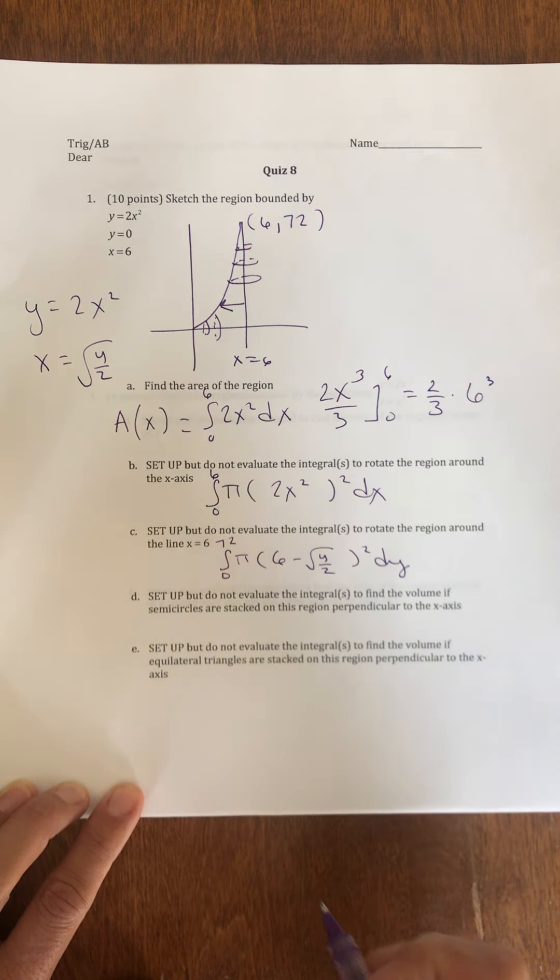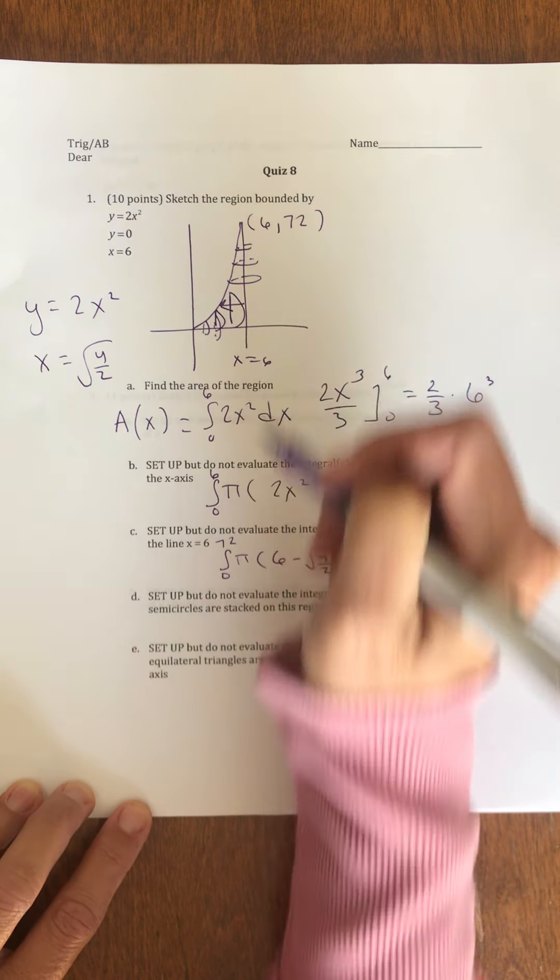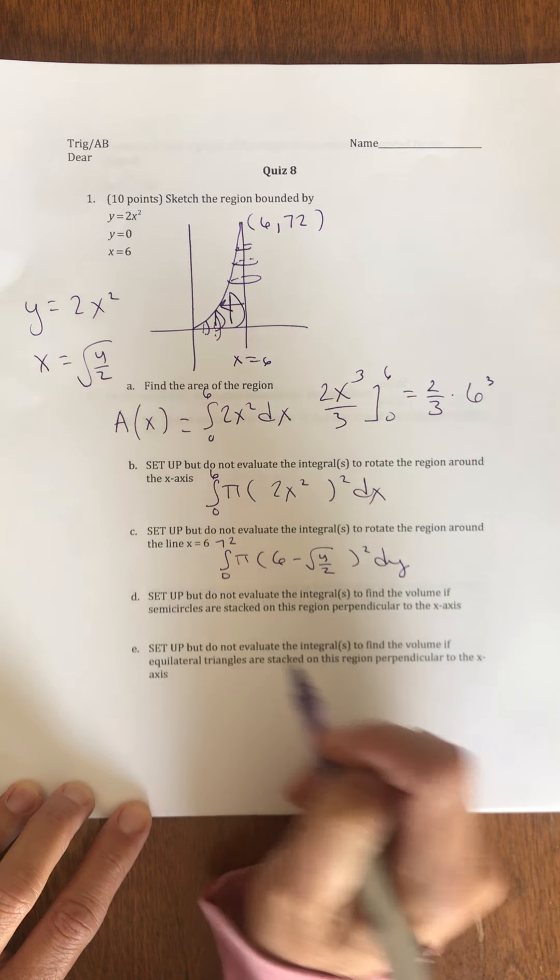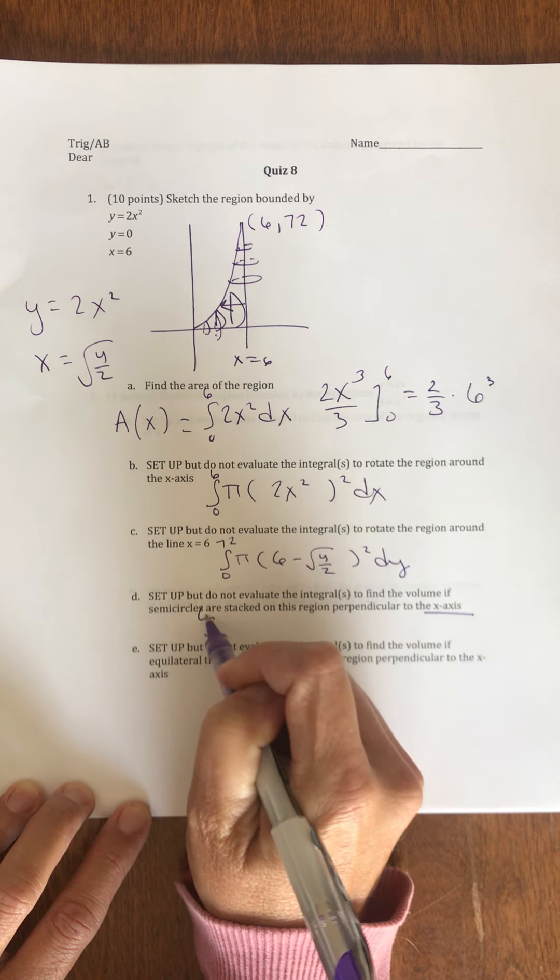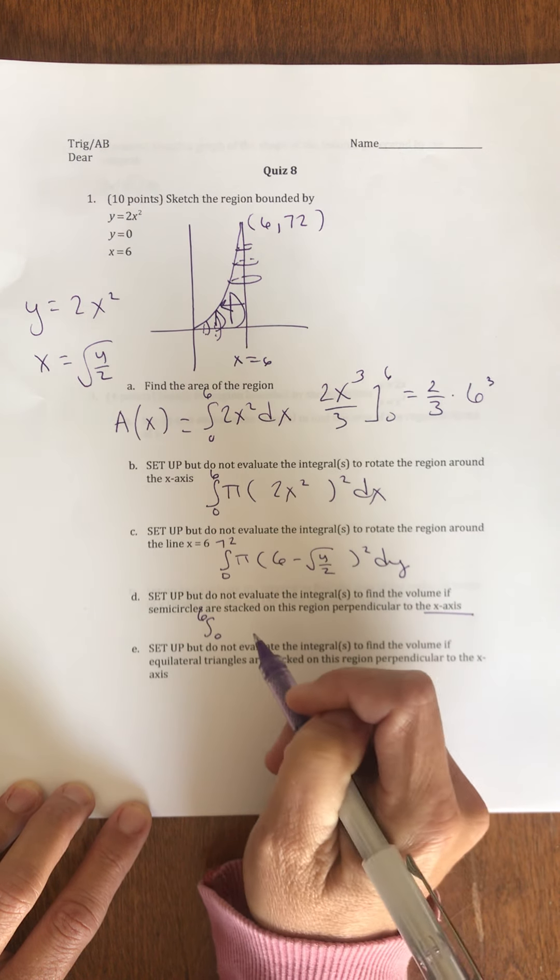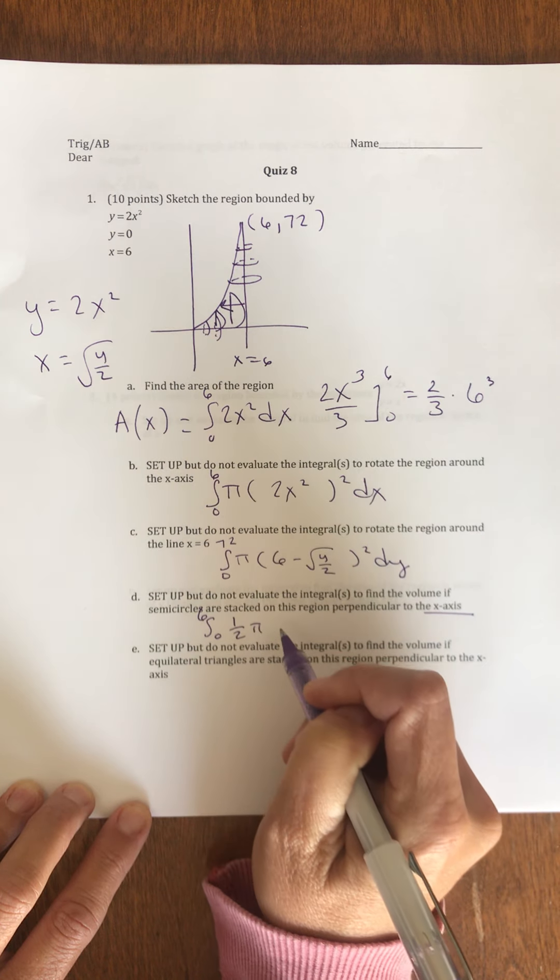If I stack some semicircles perpendicular to the x-axis, they're going to go this way. The area of a semicircle, if I'm stacking them perpendicular to the x-axis, my x-values still go from 0 to 6. My volume is going to be stacking infinitely many semicircles, so it's going to be 1 half of pi r squared in the x-direction.